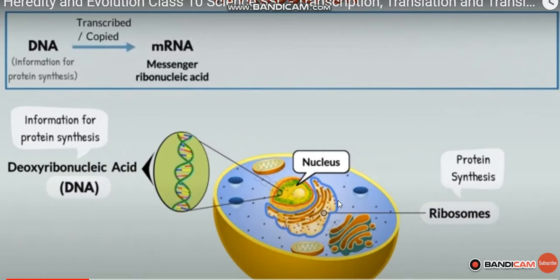In the cell we have protein synthesis. The information is called DNA. The DNA information is transcribed — copied — and the mRNA is called messenger RNA.